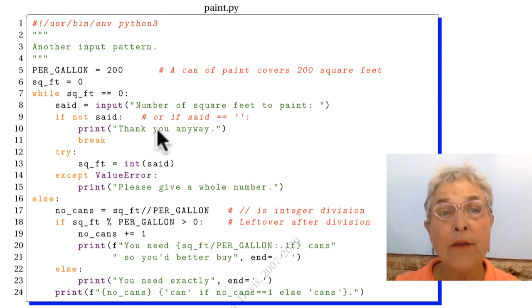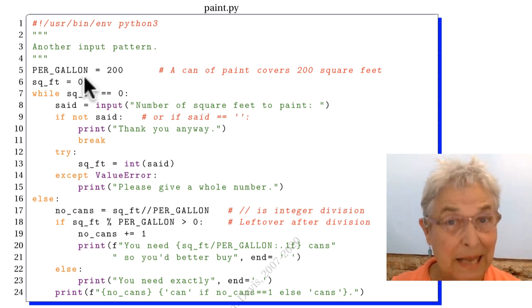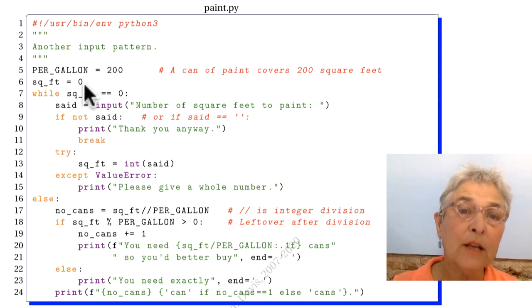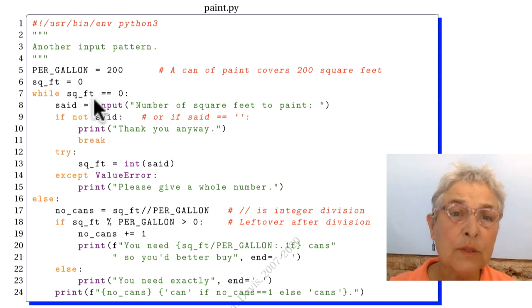On line five, we are making the constant to be 200. This is a promise to yourself and all programmers who follow the style guide, that you will never put PER_GALLON on the left side of equal sign again. It is a constant, not enforced by the interpreter. So it is a style guide constant. Okay, square feet equals zero though, that's going to be changing. While square feet equals zero, and it is, so that's true, we're going here. When it changes, we'll go into else.